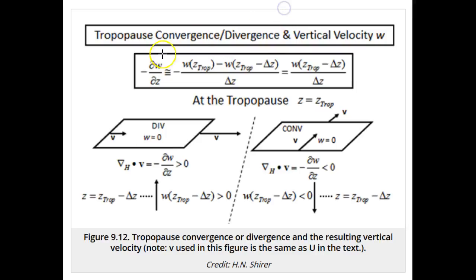If there is horizontal divergence aloft, then w must be upward to maintain the air parcel volume as the air parcel spreads out horizontally near the tropopause.